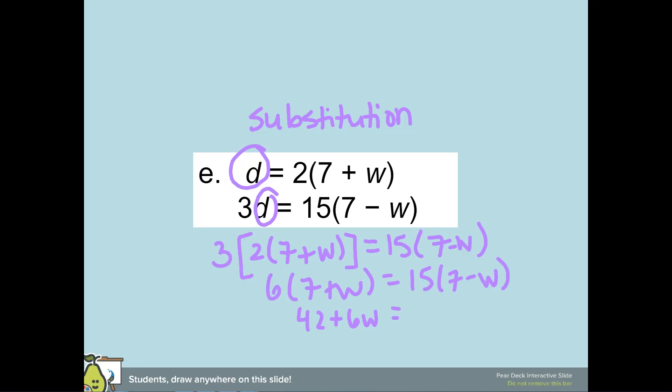15 times seven, which is going to be 105 minus 15w. I'm going to add 15w to both sides, so I'm going to get 42 plus 21w is equal to 105.